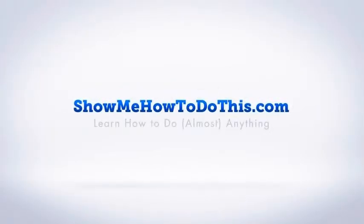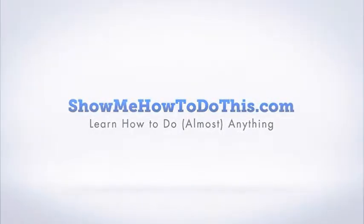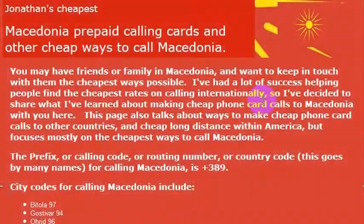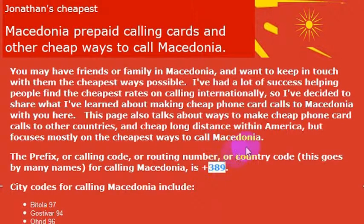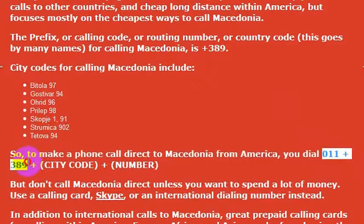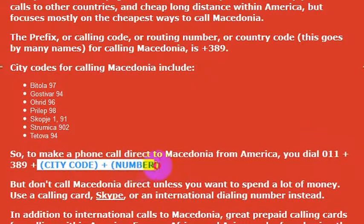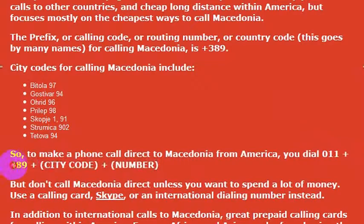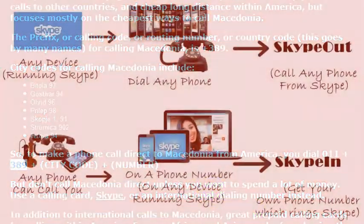Calling Macedonia is very simple. All you have to do is know the international country code for Macedonia as well as the outbound dialing code from the United States. The country code for Macedonia is 389, and the outbound dialing code from the United States to get to an international line is 011. So if you wanted to call Macedonia, you would dial 011, then 389, then the phone number you wanted to dial.